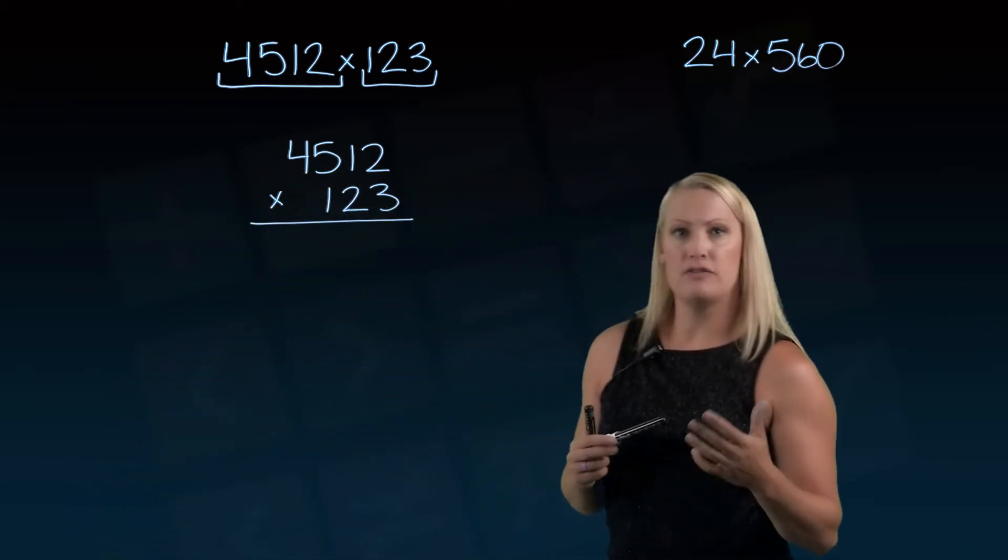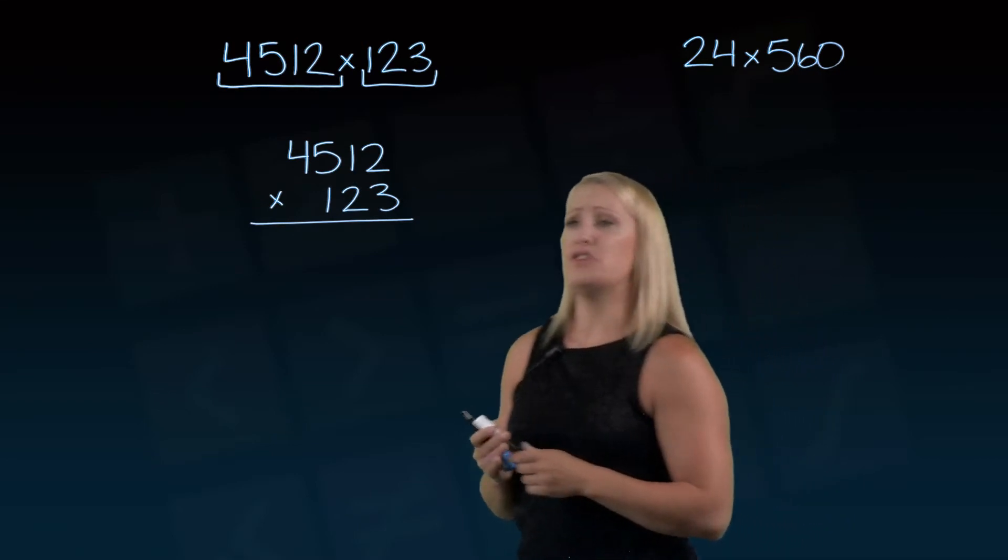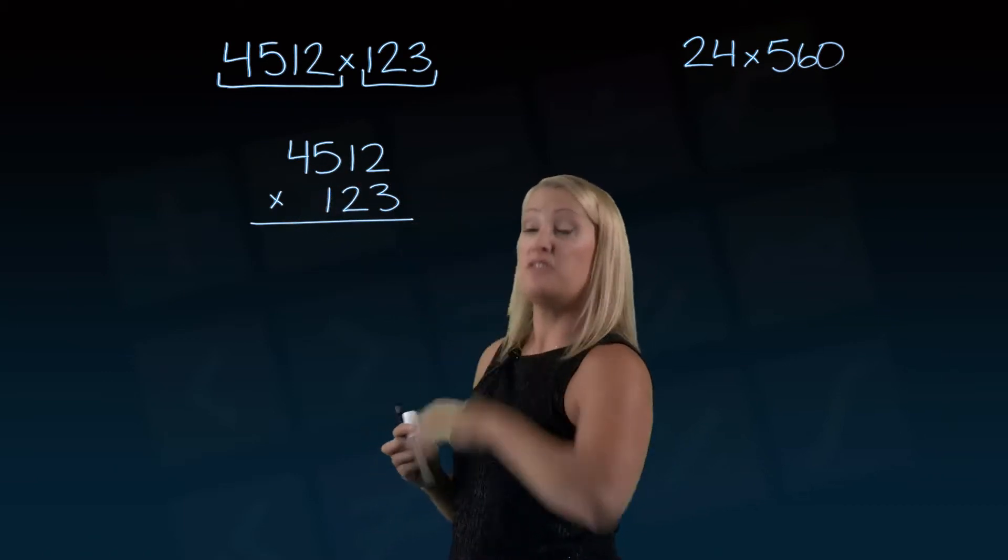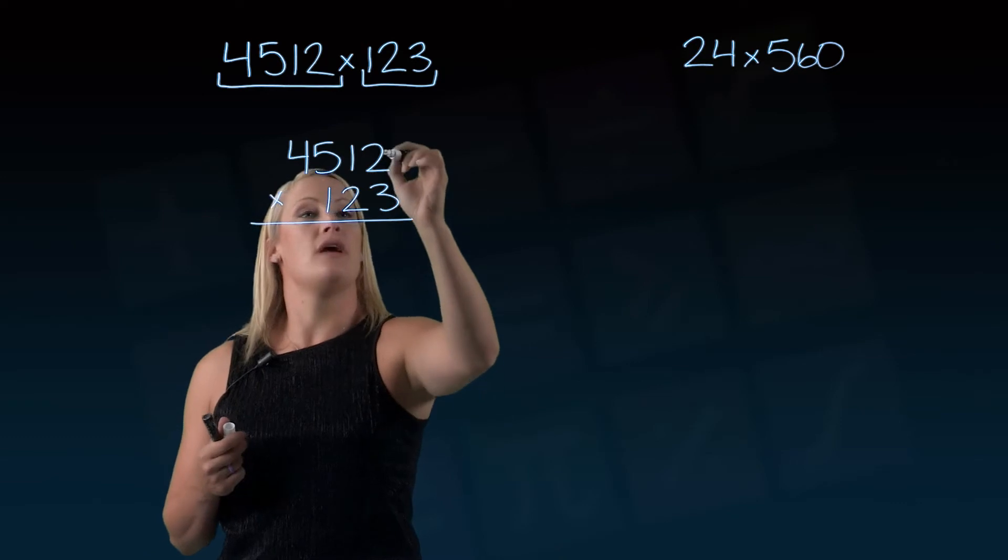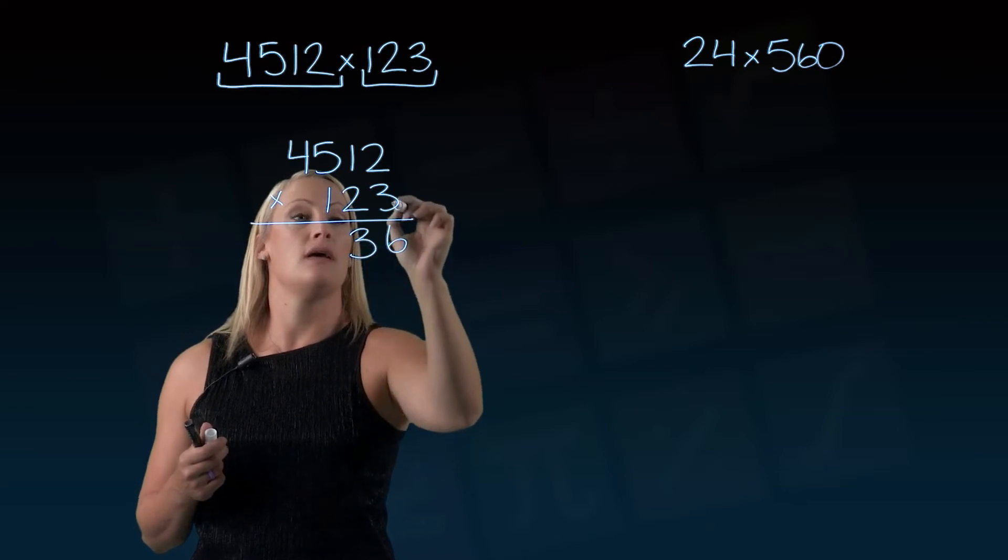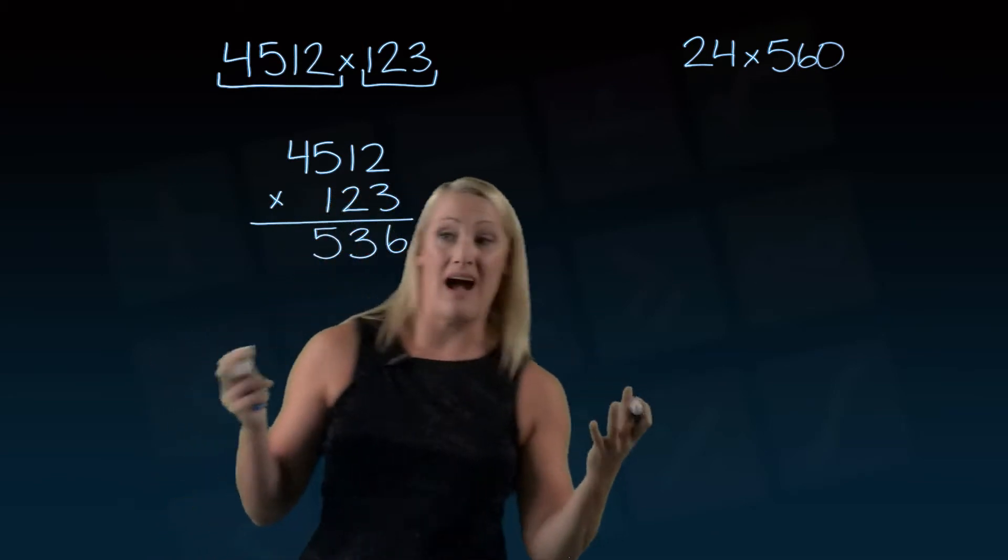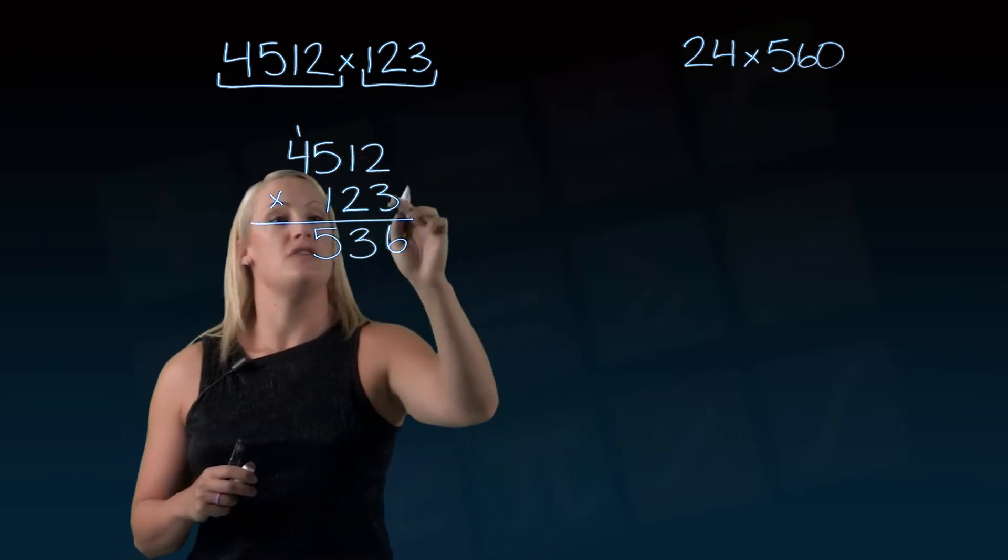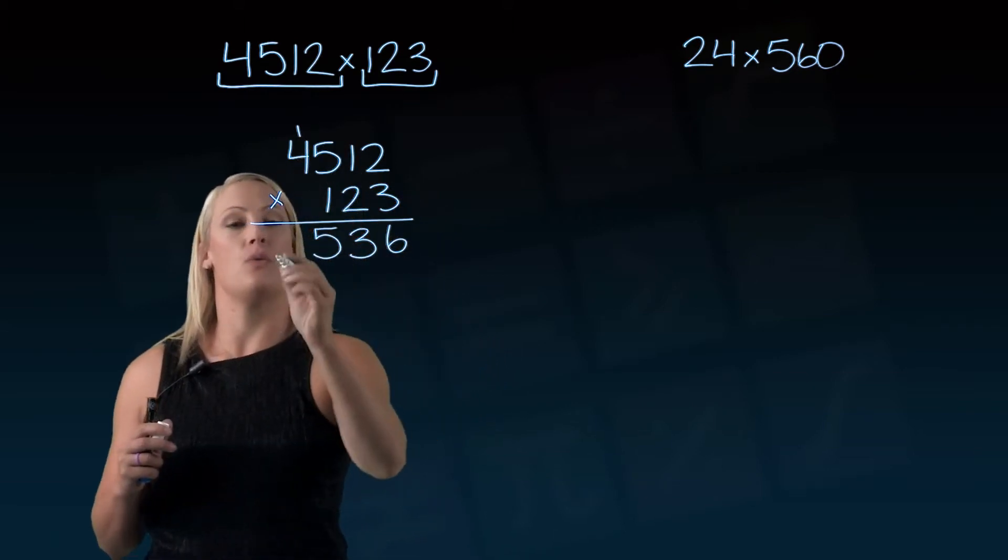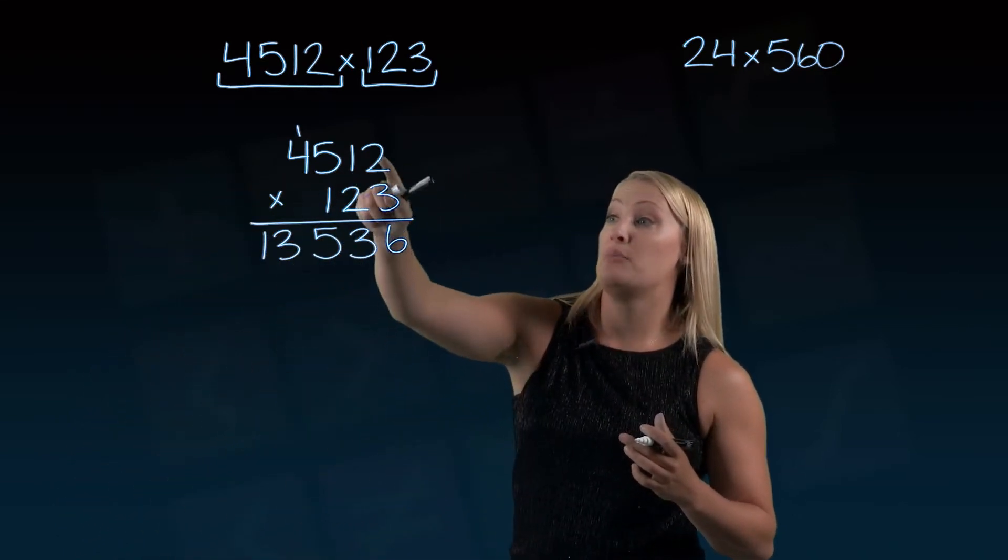We just take this one step at a time. We're going to first multiply 4512 by 3. Starting on the right-hand side: 3 times 2 is 6, 3 times 1 is 3, 3 times 5 is 15. I'll put the 5 down on the bottom and the 1 from the 15 up in the next category. 3 times 4 is 12, plus that 1 would be 13. So there we have 4512 multiplied by 3.